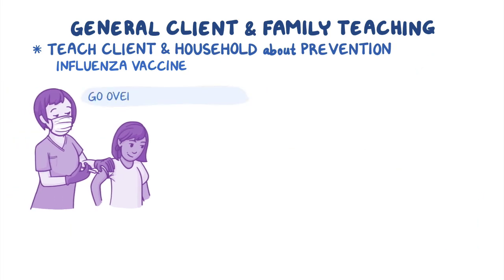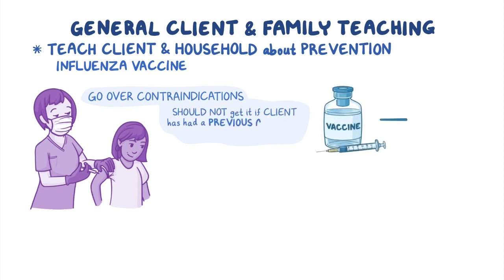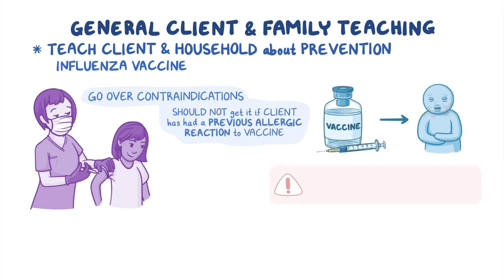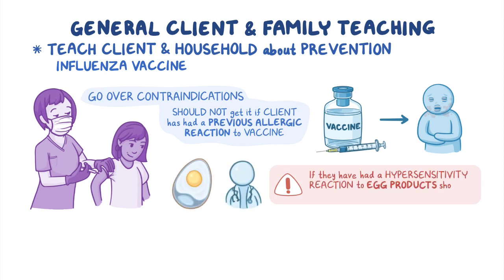Since the virus strain will change from year to year, so does the annual flu vaccine, so reinforce the importance of getting vaccinated every year. The best time to get the vaccine is September or October, before the flu season starts. Go over the contraindications of the annual influenza vaccine with your client and let them know that they should not get it if they've had previous allergic reactions to the vaccine. Also, if they've had hypersensitivity reactions to egg products, they should consult their healthcare provider before vaccination.